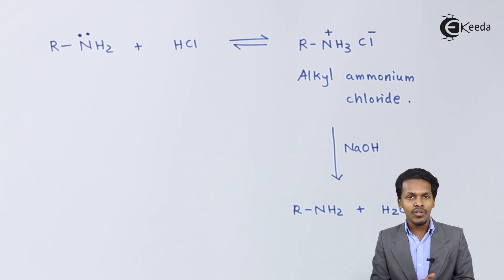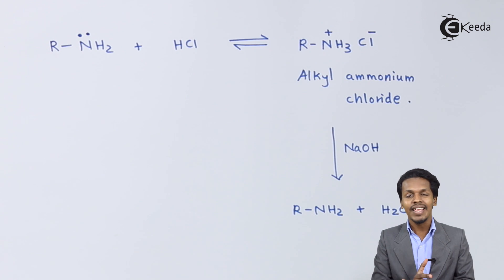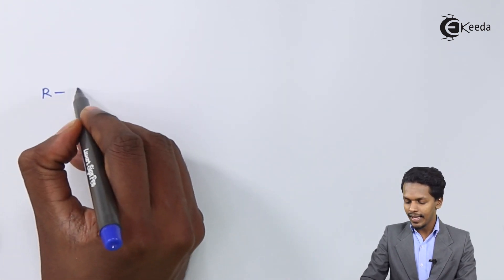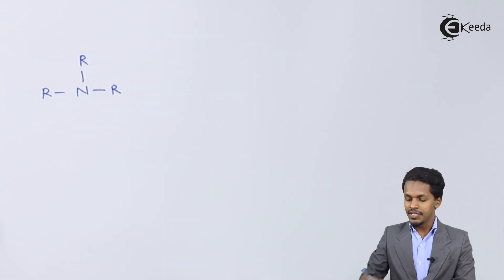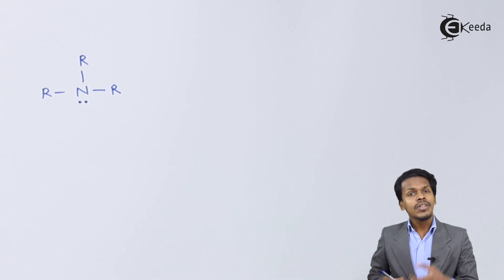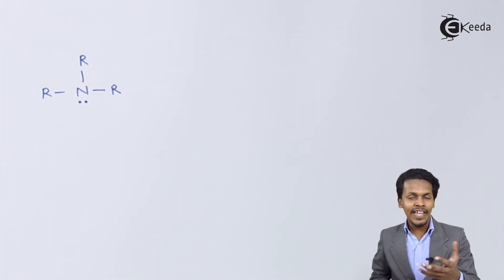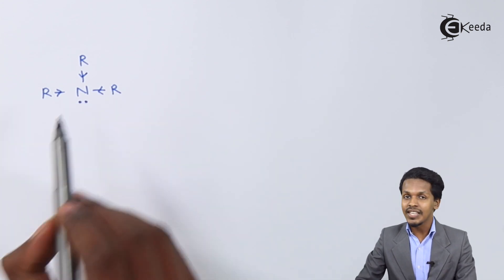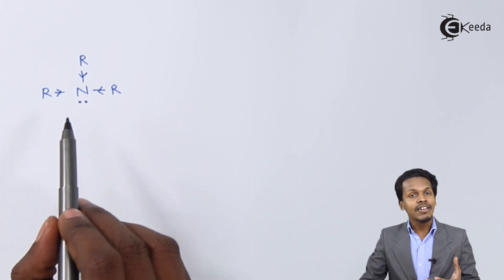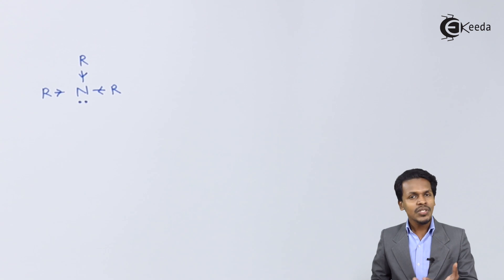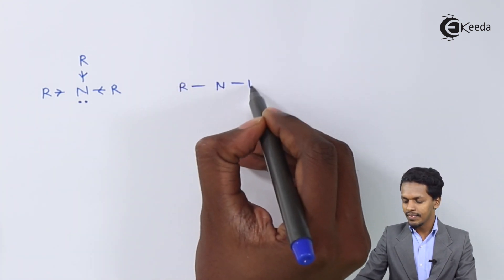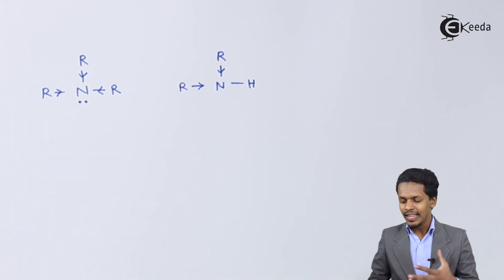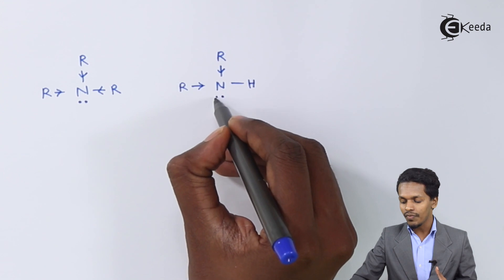Now let's discuss the difference in basicity between secondary, primary, and tertiary amines. For a tertiary amine R3N, the three alkyl groups attached to the nitrogen atom have a positive inductive effect, which increases the electron density on the nitrogen atom, making the tertiary amine more basic. A secondary amine has two alkyl groups and is also basic, but less so than the tertiary amine.